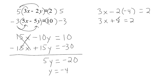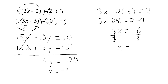We move positive 8 to the other side as minus 8, giving 3x equals negative 6. Dividing both sides by 3 gives x equals negative 2. So the point of intersection between these two lines is the ordered pair negative 2, negative 4. Let's do one more example.